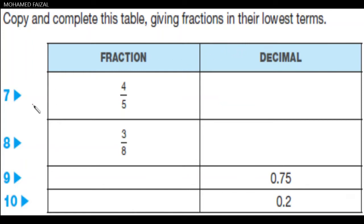Now we are going to solve problems 7 to 10. The first problem deals with copy and complete this table, giving fractions in their lowest form. Here we are going to convert this fraction into decimal form. So we have 4/5, and to convert it to decimal form we can use the long division method.